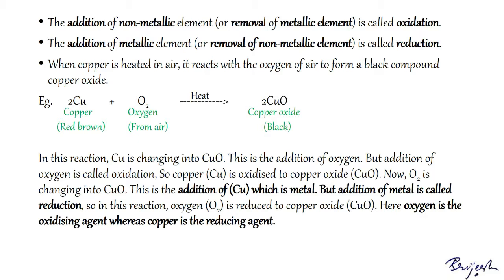When copper is heated in air, it reacts with oxygen to form the black compound copper oxide. In this reaction, copper is changing into copper oxide — this is the addition of oxygen, which is oxidation. So copper is oxidized to copper oxide. On the other hand, O₂ is gaining copper (a metal), and addition of metal is called reduction, so oxygen is reduced to CuO. Here oxygen is the oxidizing agent and copper is the reducing agent.